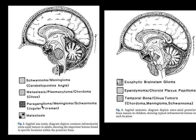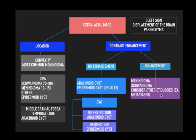Other posterior fossa lesions in extra-axial locations include schwannoma, meningioma, metastasis, plasmacytoma, clival lesions, paraganglioma, and metastasis. There are also intraaxial lesions that can mimic extra-axial lesions: exophytic brainstem glioma, ependymoma, choroid plexus papillomas, and temporal bone lesions — especially when aggressive, making it very difficult to determine whether the lesion is intraaxial or extra-axial.